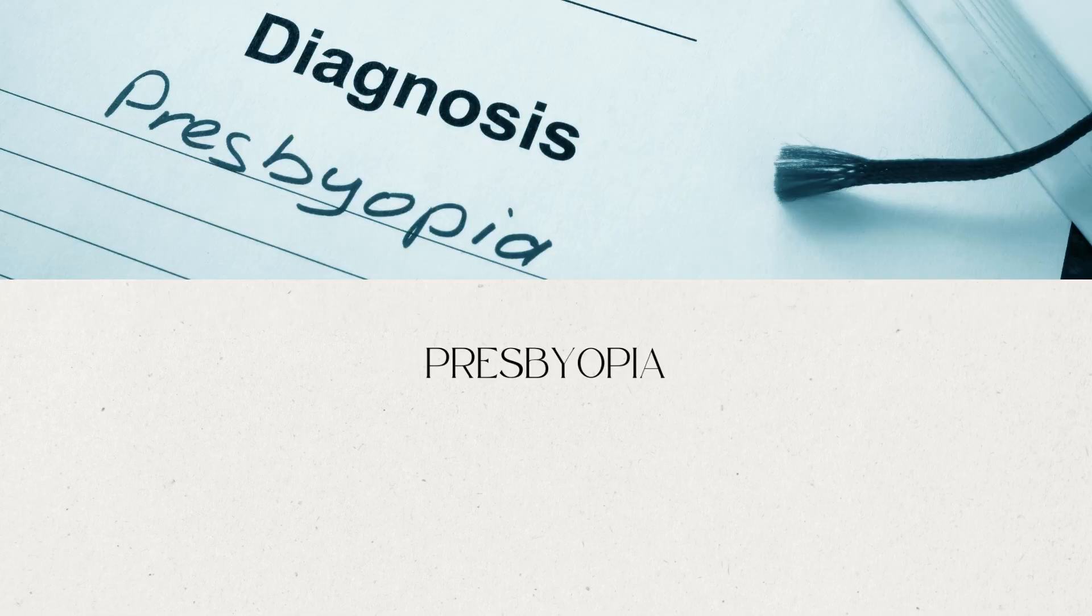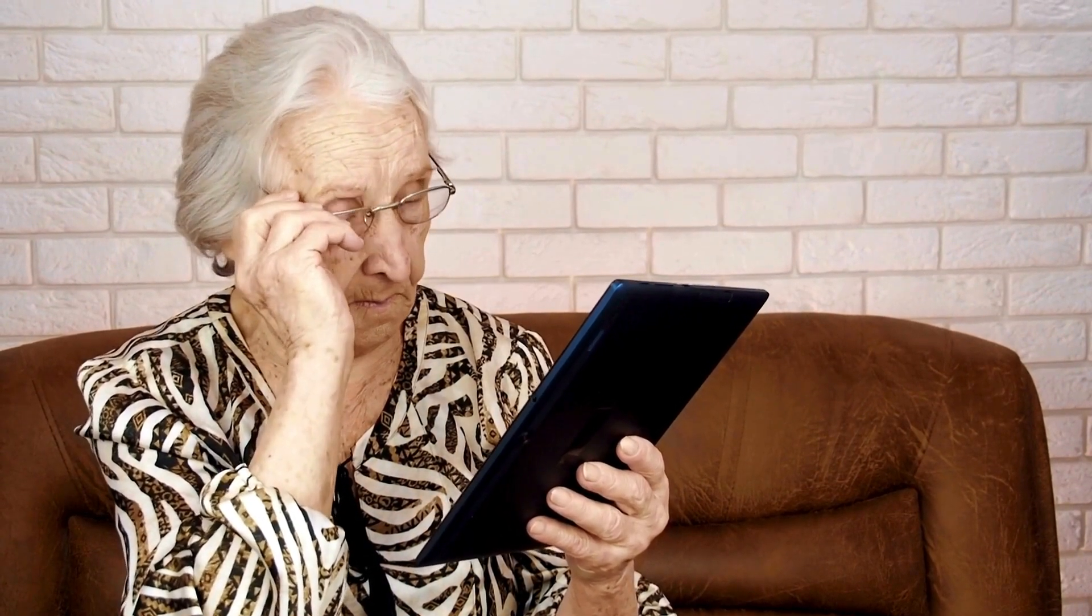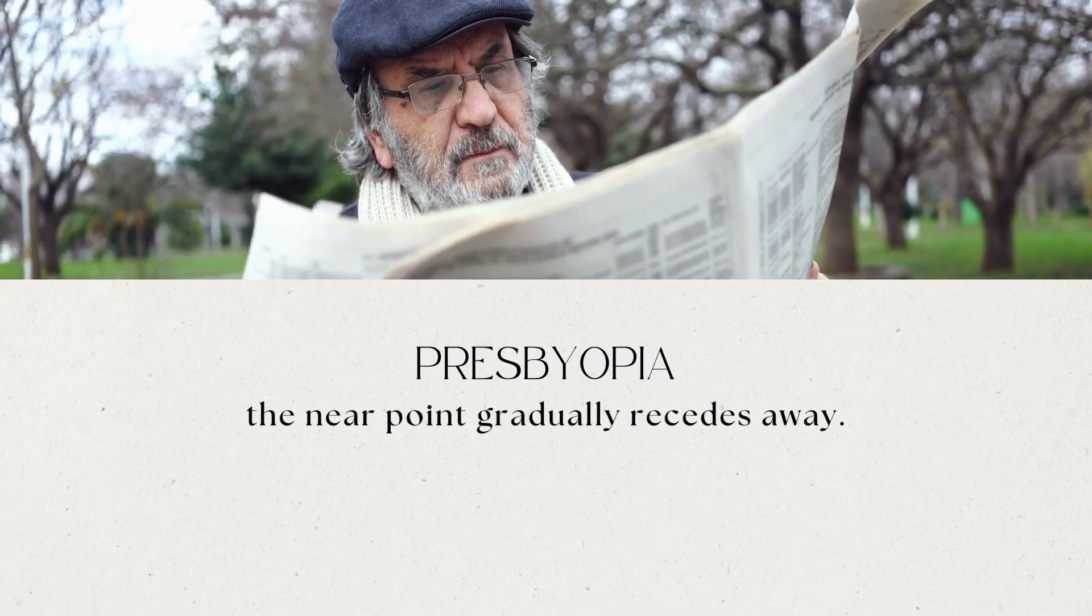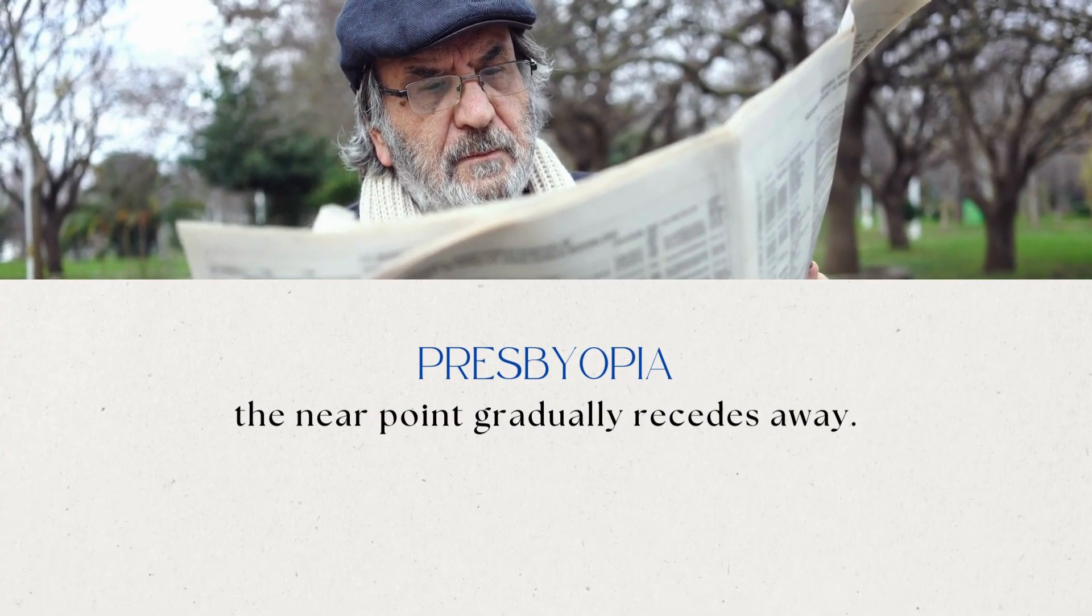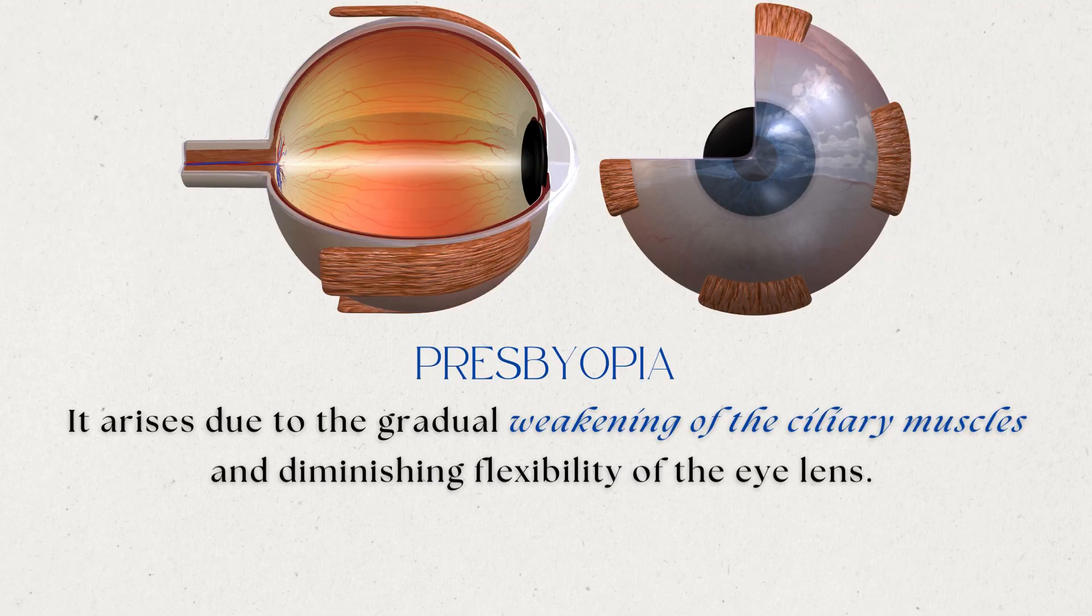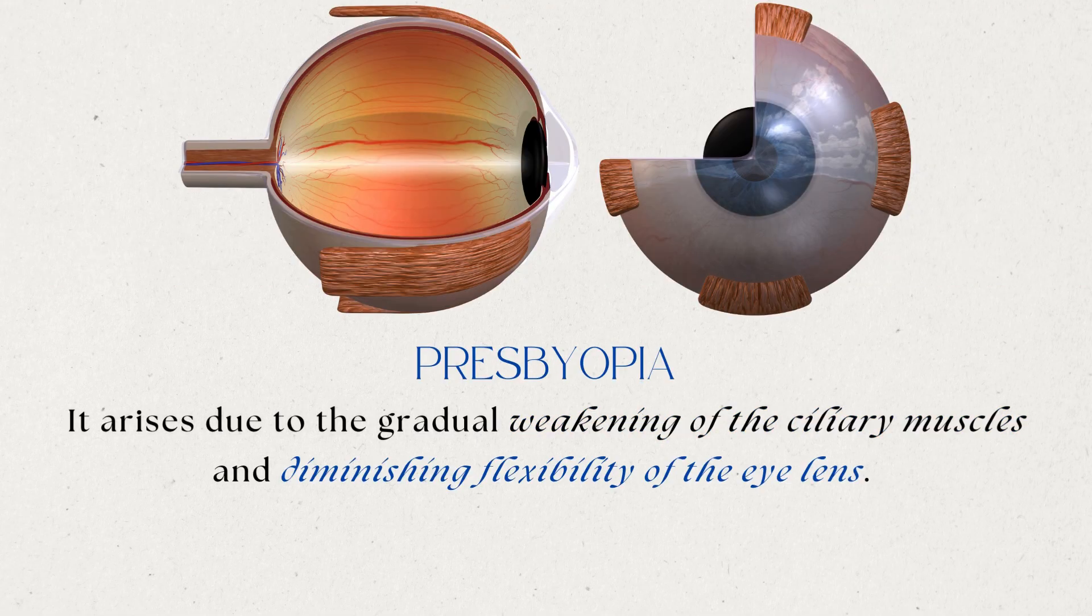Next is presbyopia. The power of accommodation of the eye usually decreases with aging. For most people, the near point gradually recedes away. They find it difficult to see nearby objects comfortably and distinctly without corrective eyeglasses. This defect is called presbyopia. It arises due to the gradual weakening of the ciliary muscles and diminishing flexibility of the eye lens.